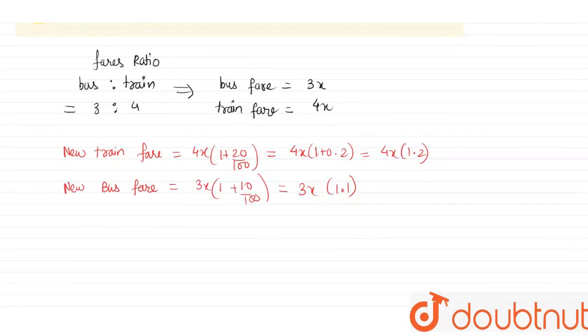So the new ratio, the new ratio of bus to train is 3x times 1.1 divided by 4x times 1.2. This becomes 3 by 4 times 11 by 12. Here, 12 gets cancelled by 3 and it becomes 11 by 16.